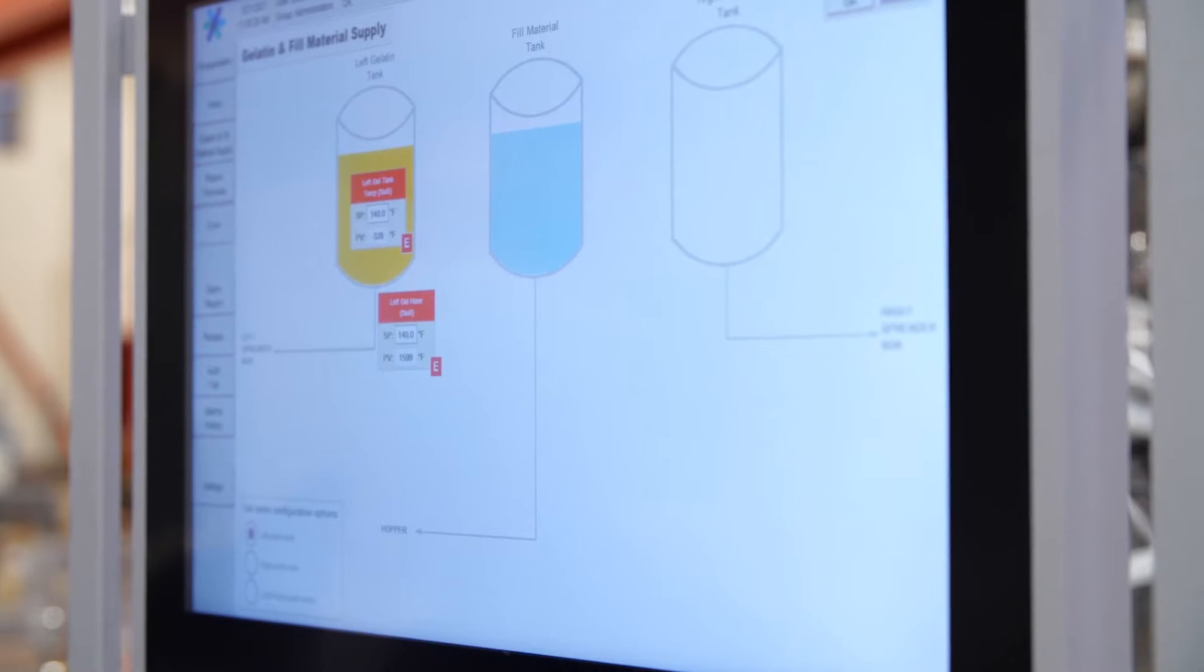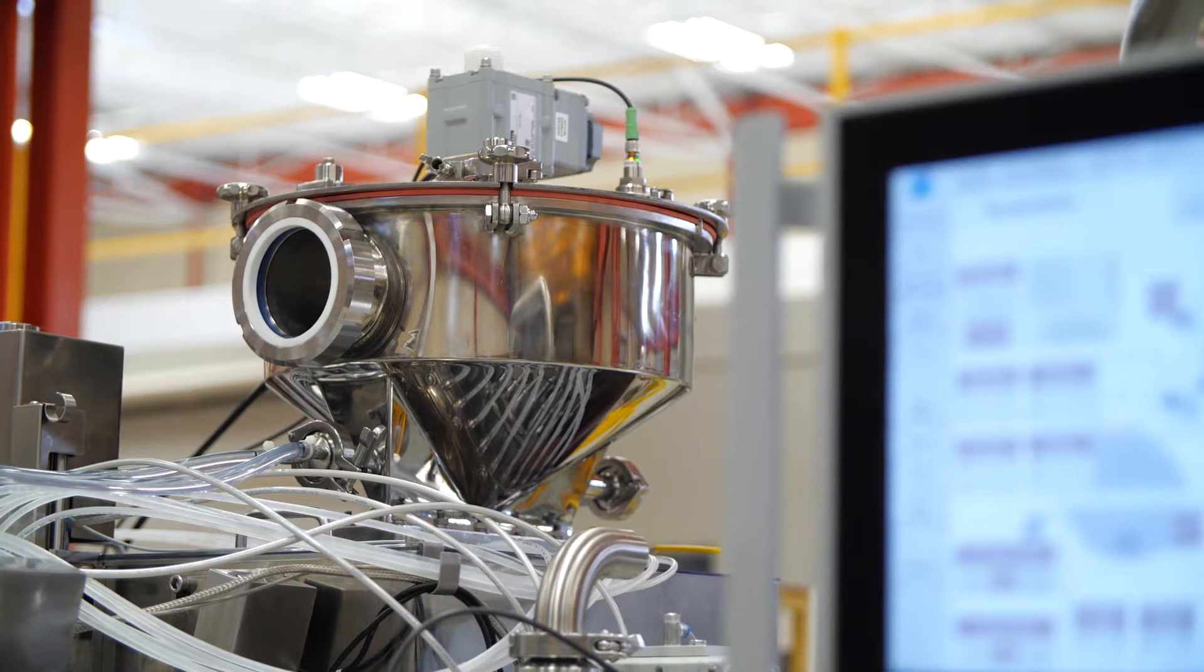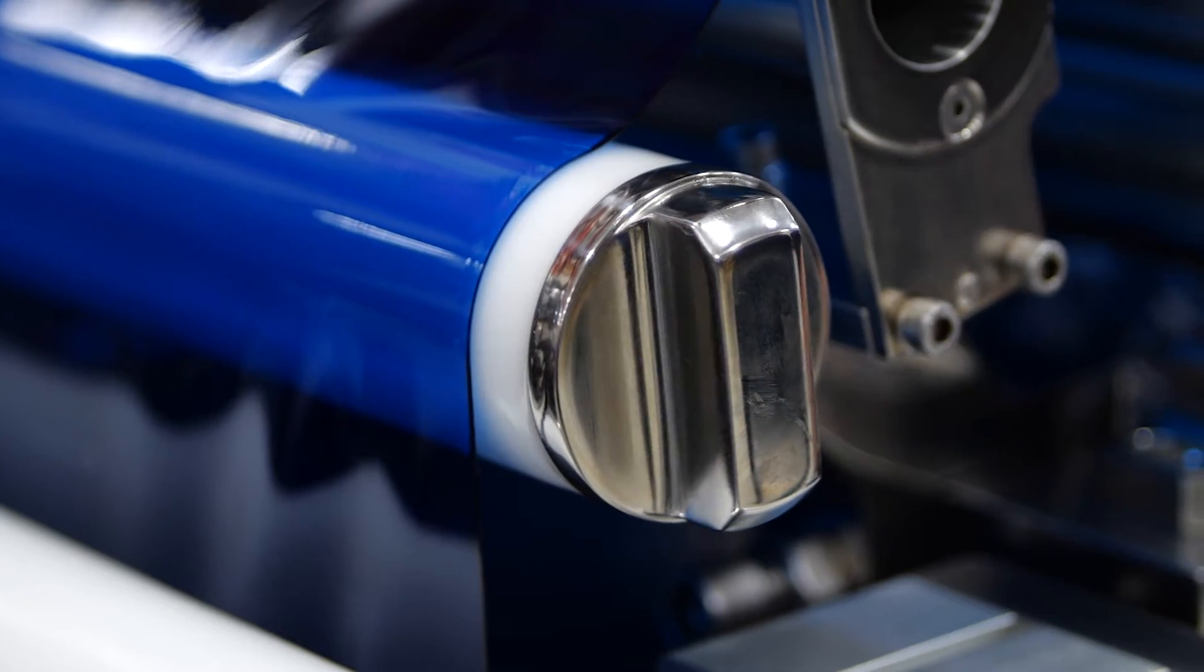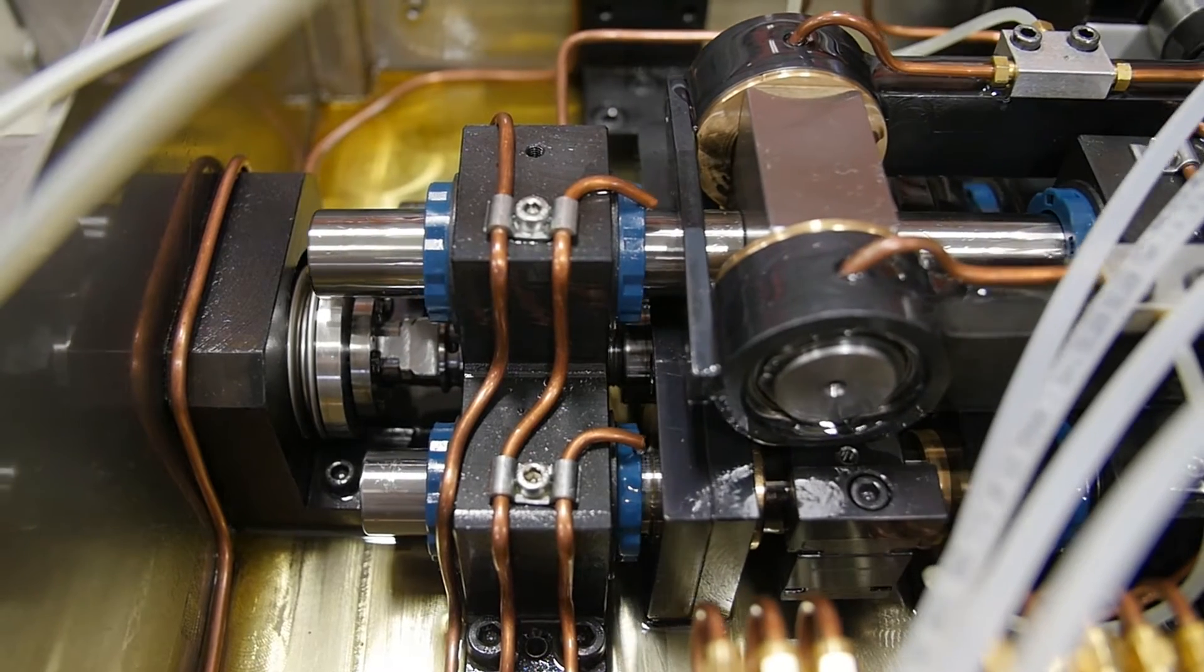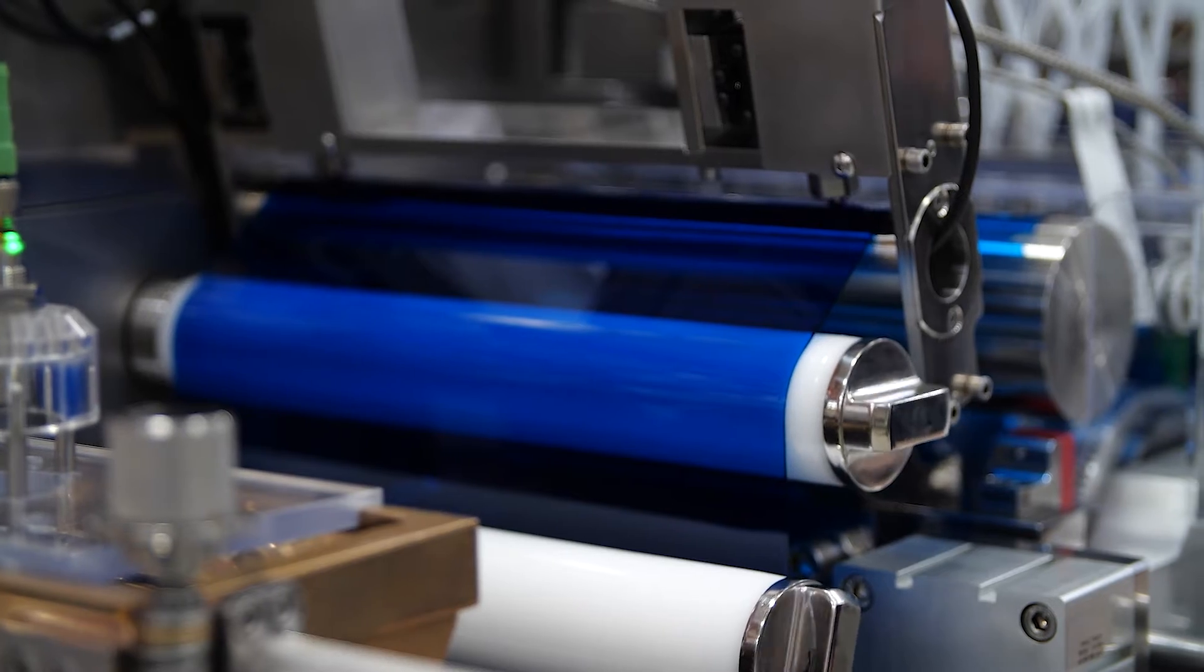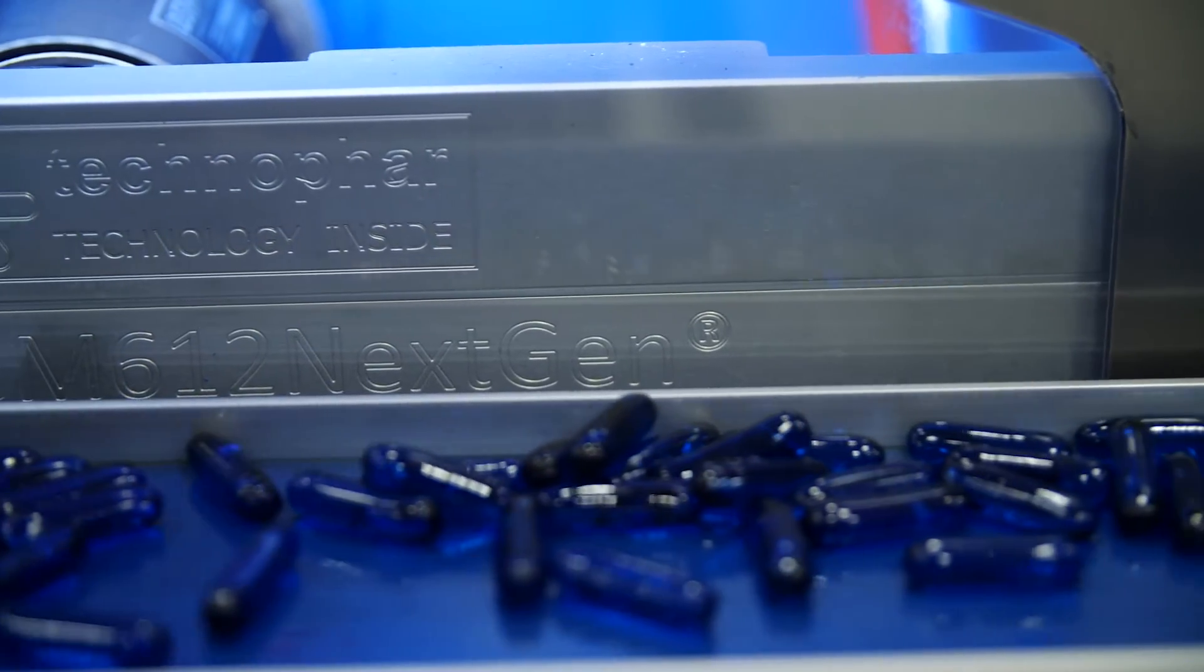The PLC screen also allows the operator to take advantage of the machine's electronic gearing. Four servo axes control the machine's stroke, die rolls, and medicine pump, allowing for full production flexibility and more precise medicine injection, resulting in overall improved capsule quality compared to mechanically geared machines.